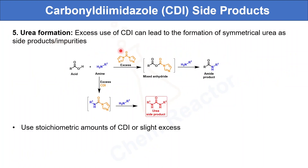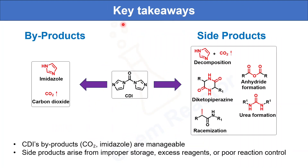Finally, urea formation. Excess use of CDI can lead to the formation of symmetrical urea as a side product or impurity. This symmetrical urea formation can be avoided by using stoichiometric amounts of CDI, or only a slight excess, in the reaction.